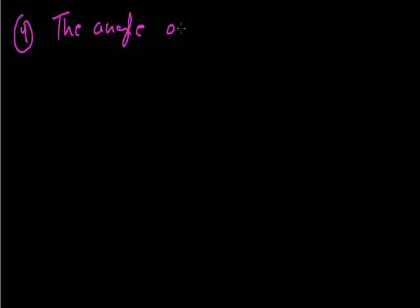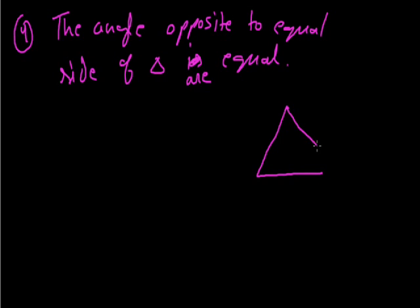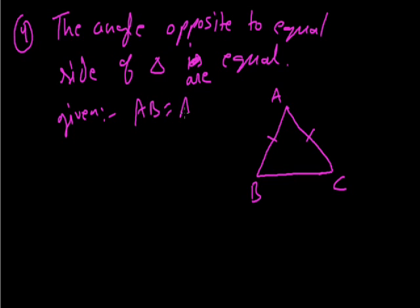Now the next property related to triangles is that the angle opposite to the equal sides of a triangle are equal. Let's say there is a triangle ABC where two sides are equal — AB and AC are equal. We have to prove that the angle opposite to side AB, which is angle C, is equal to the angle opposite to side AC, which is angle B.